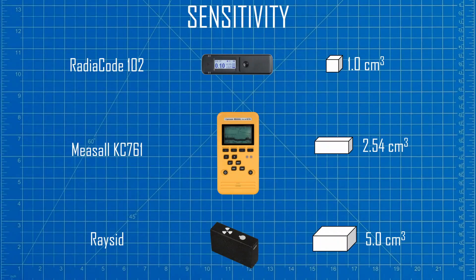Comparing the RadioCode to Geiger counters is a little unfair, so I just want to touch upon the sensitivity of the product. Here I am comparing the volume of the scintillation crystal that is used in two other comparable gamma ray spectrometers. I have not had a chance to test the RaySID device yet, but I do own a MESOL KC761, and it does indeed record over twice the count rate of the RadioCode product.